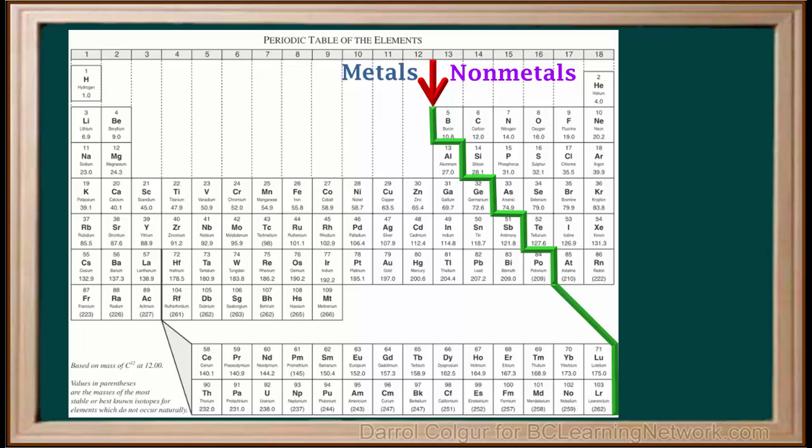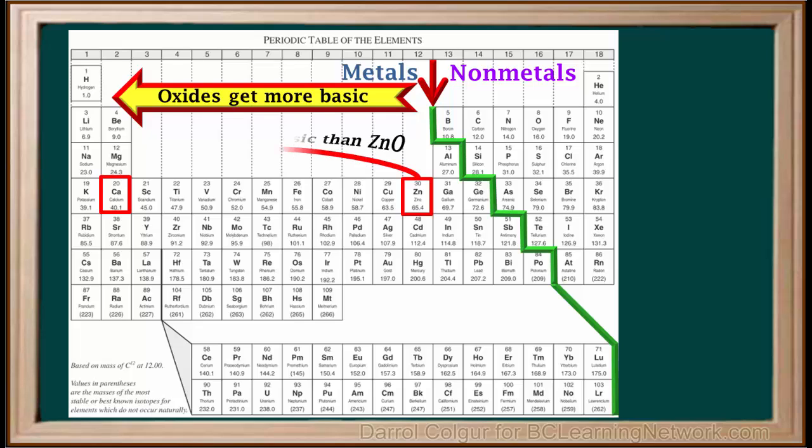It's useful to know that metal oxides generally get more basic as one moves to the left of the periodic table. So for example, calcium oxide is more basic than zinc oxide.